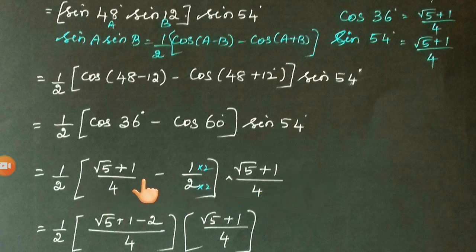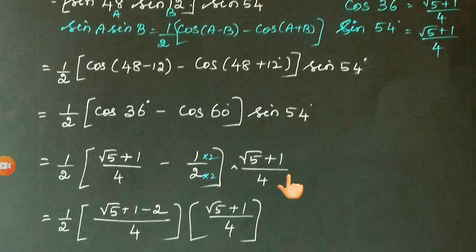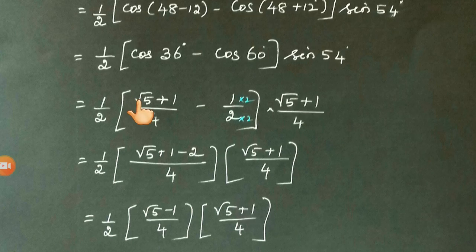Now look at these two terms. See the denominator: here we have 4 and here we have 2. So let's change this to 4. Let us multiply both numerator and denominator by 2, so it will become 4 in the denominator. So (√5 + 1 - 2)/4 × (√5 + 1)/4.